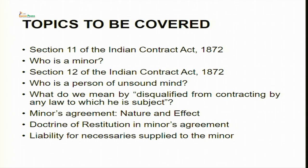You can see on your screen the topics which would be covered in today's session. We will be starting with discussing Section 11 of the Indian Contract Act 1872, then moving on to who is a minor, thirdly Section 12, then who is a person of unsound mind, what do we mean by the phrase 'disqualified from contracting by any law to which he is subject', the nature and effect of minor's agreement, doctrine of restitution in minor's agreement, and liability for necessaries supplied to the minor.